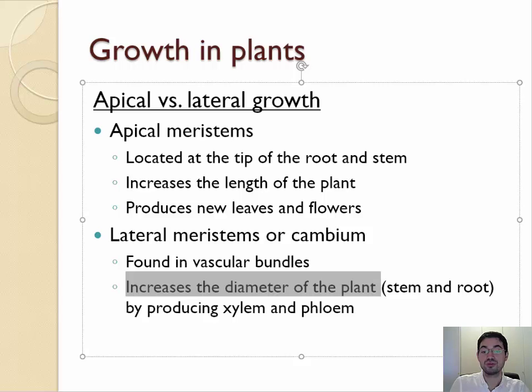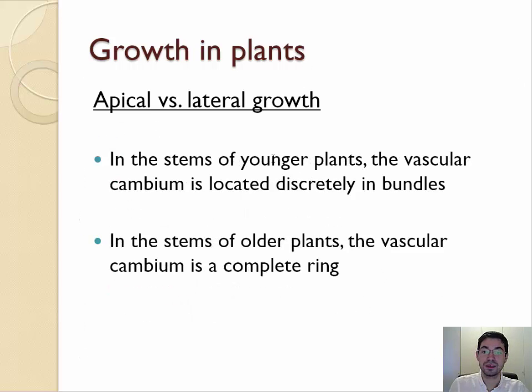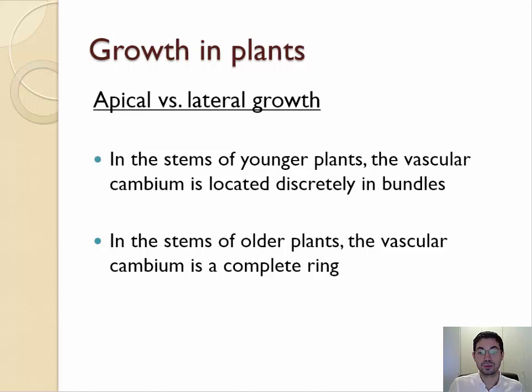Lateral meristems produce new xylem and phloem. In the stems of younger plants, the vascular cambium is normally in its own bundles, but in older plants it forms a complete ring.